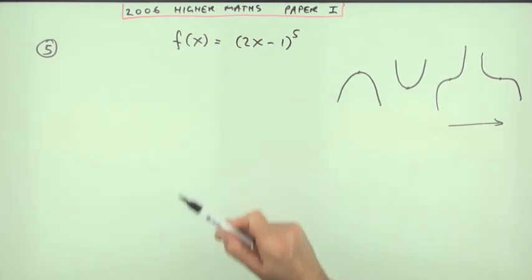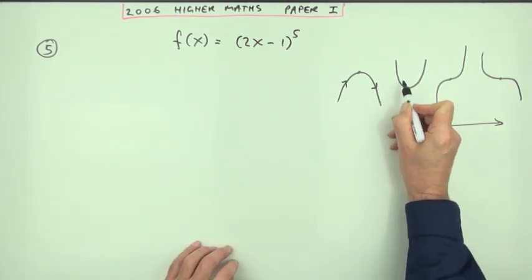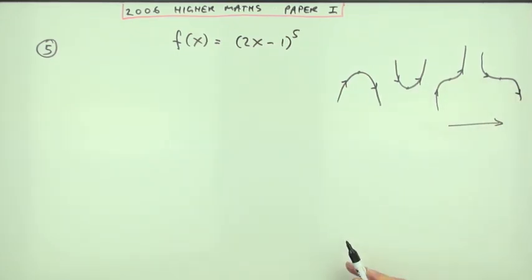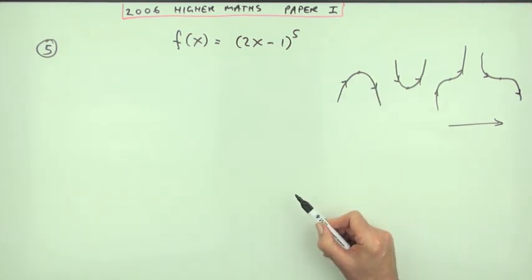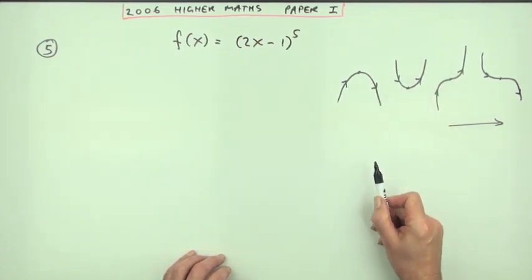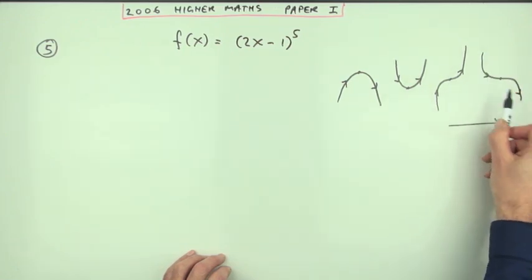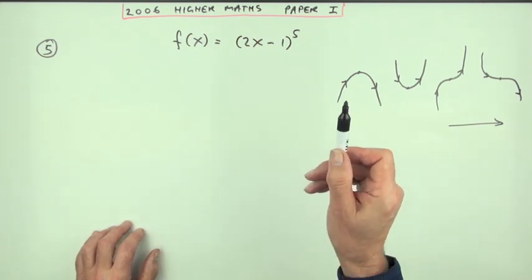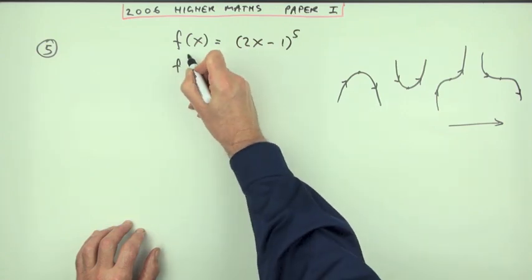You'll identify the type from what's happening to the gradient before and after each point. Positive then negative indicates a maximum turning point; negative then positive indicates a minimum; positive then positive is a rising point of inflection; negative then negative is a falling point. So the first part is finding the derivative — f'(x).